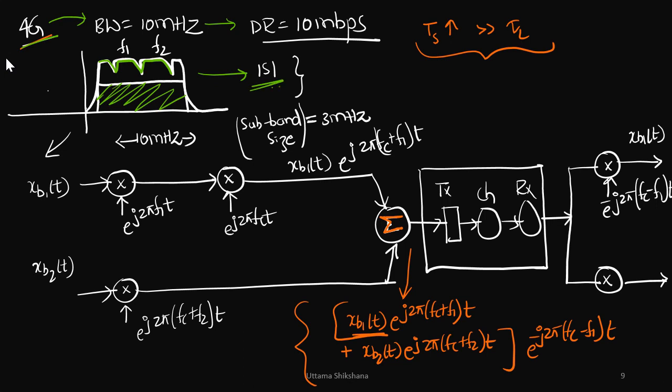So when we divide it into subbands, the subband size, let's say for example 3 megahertz, then the symbol duration increases and that will be greater than the delay spread. And in this case the ISI will be very less. To know this concept, please go to the previous videos to get better clarity.